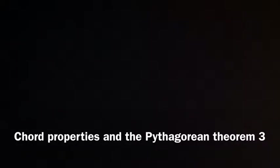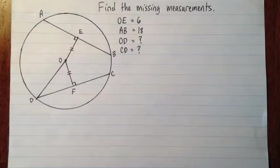Hi! In this video, I'll show you how to combine some chord properties and the Pythagorean theorem to find some unknown lengths in a circle. Okay, so this question asks us to find two different missing measurements.